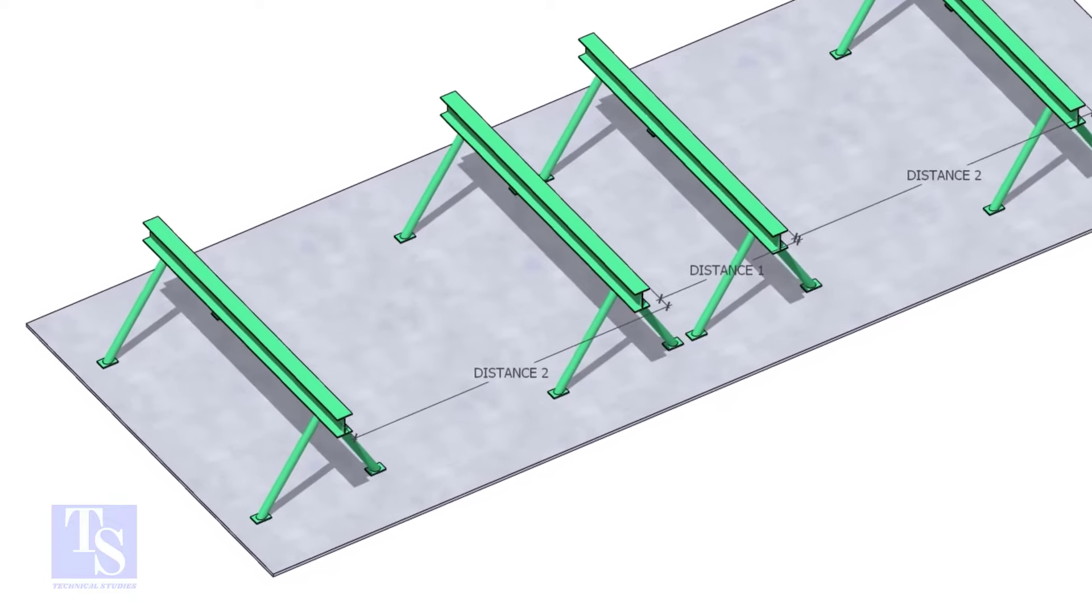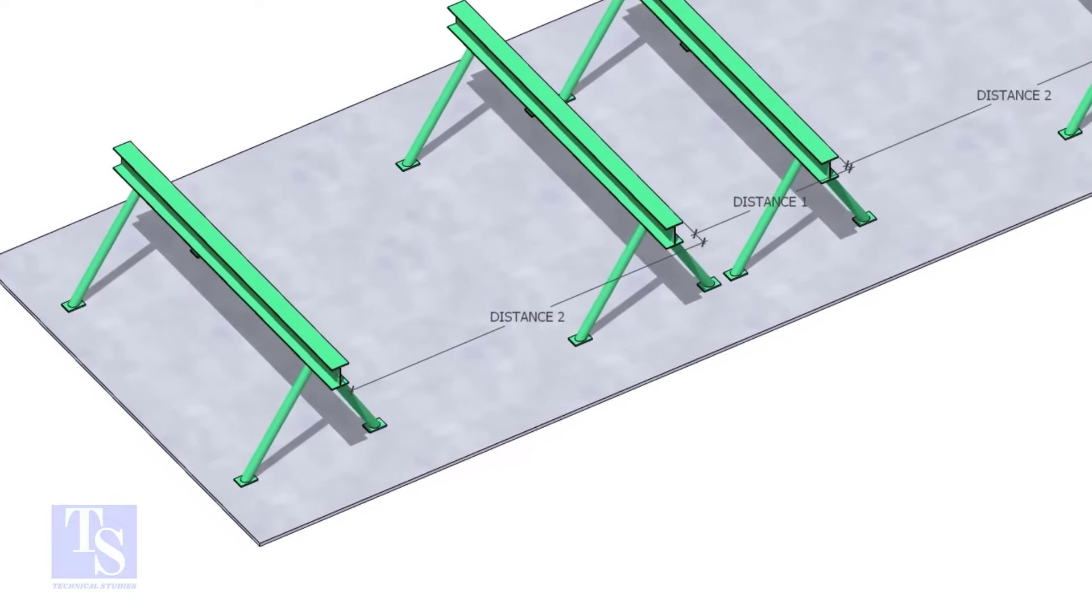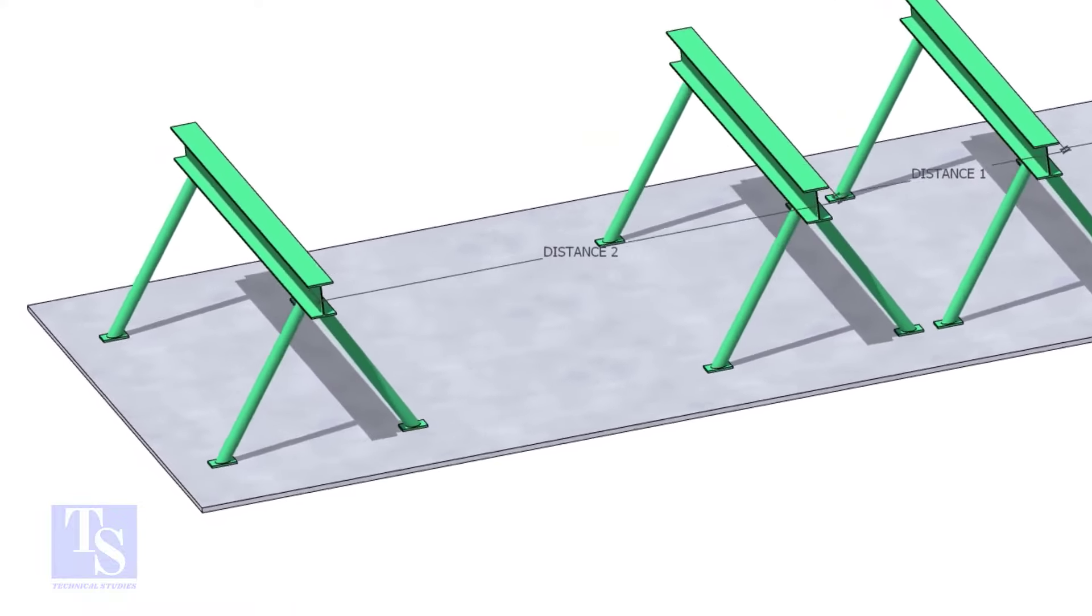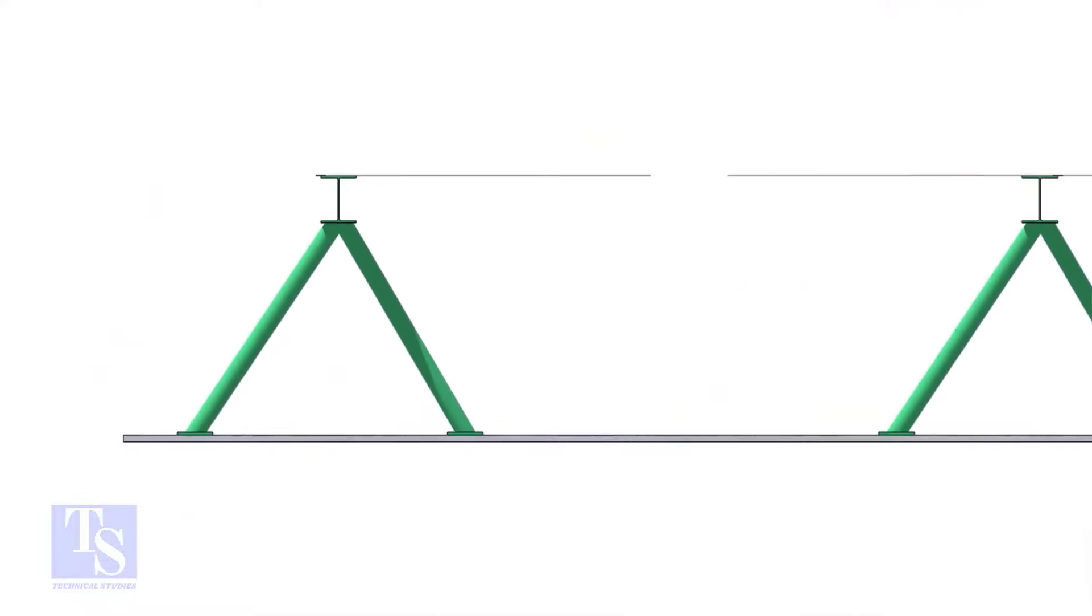Distance 1 shall be 1 meter to 1.2 meters, and distance 2 shall be 2 to 2.5 meters, less than the random pipe.